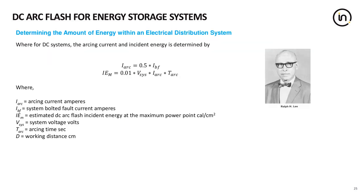On the back of NFPA 70E in Appendix D, and also in IEEE 1584, it talks about the maximum power method for DC systems. This was developed by Ralph Lee back in the 1950s and 60s and is still the gold standard today. Through his analysis and testing, he found that the arcing current on a DC system is 50% of the bolted fault, and the resulting incident energy is 1% of the system voltage times the arcing current times the time to interrupt. In order to determine the incident energy, we have to determine the state of charge, calculate the available fault duty, and figure out how quickly the protective device will open.